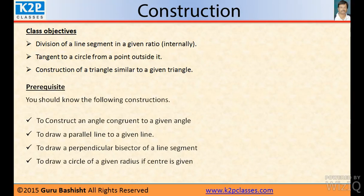Prerequisite: you should know the following constructions. Because whatever we are going to learn is for class 10, and in class 9 you must have learned to construct an angle congruent to a given angle, to draw a parallel line to a given line, to draw a perpendicular bisector of a line segment, and to draw a circle of a given radius if center is given.